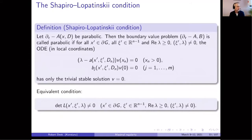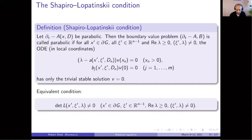Now we're in the program of checking if a parabolic boundary value problem has this property. The first question is: what is a parabolic boundary value problem? This is a classical condition from maybe 50 years ago called the Shapiro-Lopatinskii condition concerning the boundary operator. I'm considering an operator of order 2M. If the operator is order 2M, I need M boundary conditions, so the number of boundary conditions is half the order.